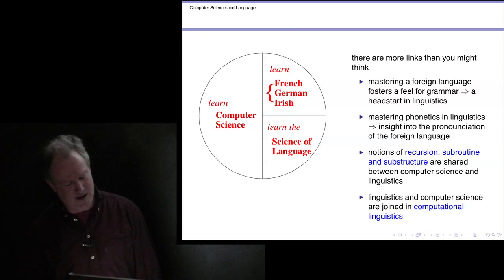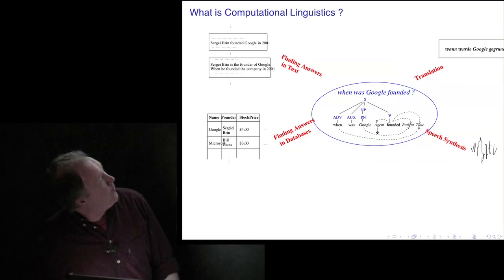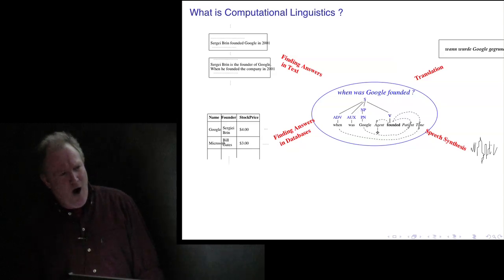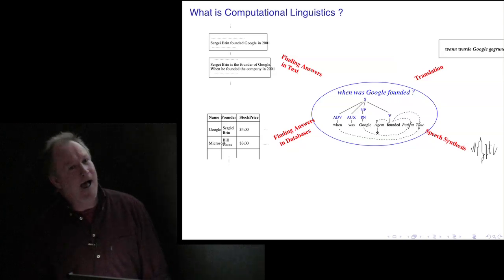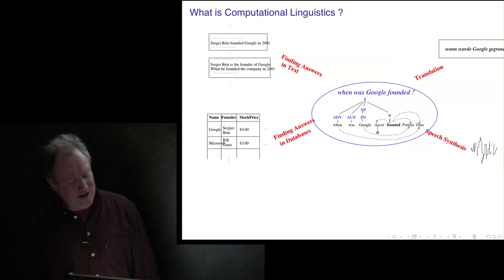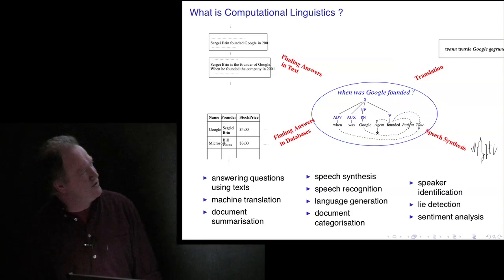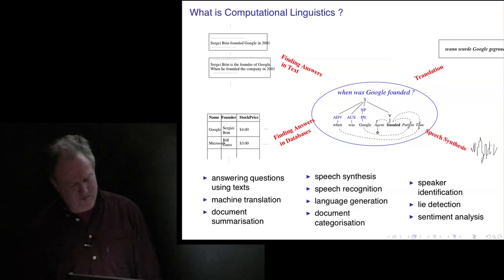One of the things that joins them all up is computational linguistics. This is how you try to make technologies around language by exploiting what's known about languages as an object of scientific study. There are myriad ways in which this occurs: speech recognition, speech synthesis, language generation, identifying who is speaking, and so on — very many applications.